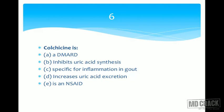The drug that inhibits uric acid synthesis is allopurinol — colchicine is not allopurinol. Drugs that increase uric acid excretion are called uricosuric drugs, such as probenecid — colchicine is not uricosuric. We are left with the correct answer: colchicine is specific for inflammation in gout. It produces a very good anti-inflammatory effect only in gout, inhibits leukotriene synthesis, and is useful both to terminate an acute attack and to prevent further attacks.